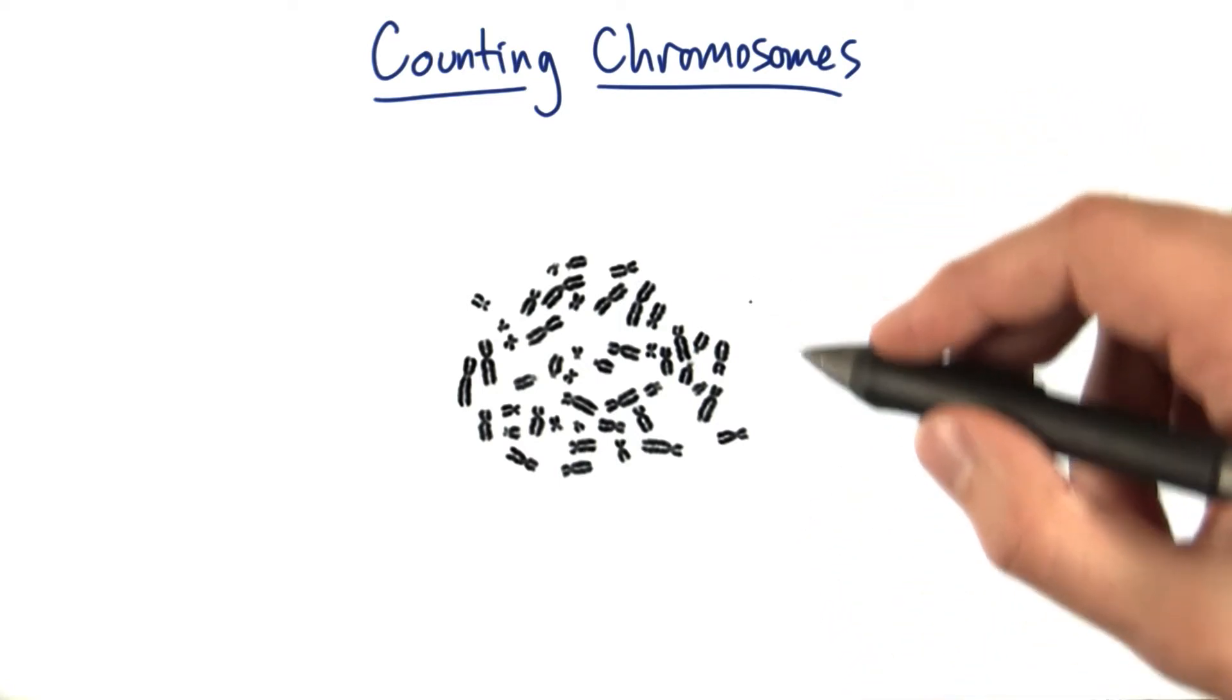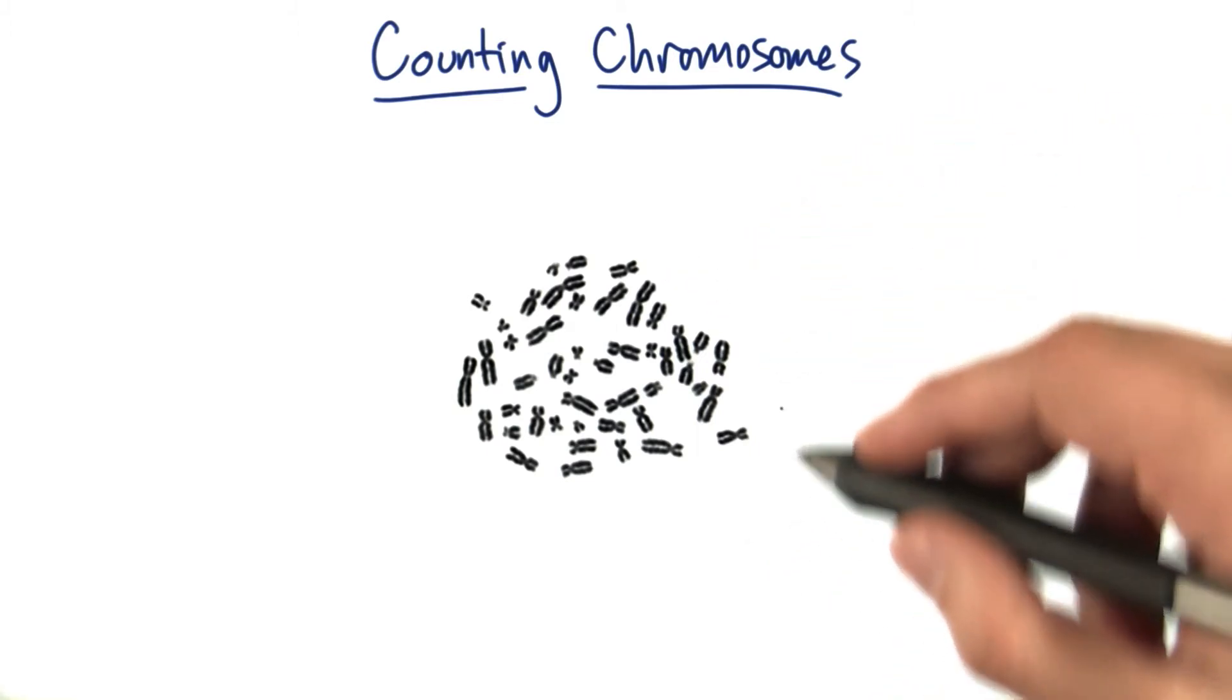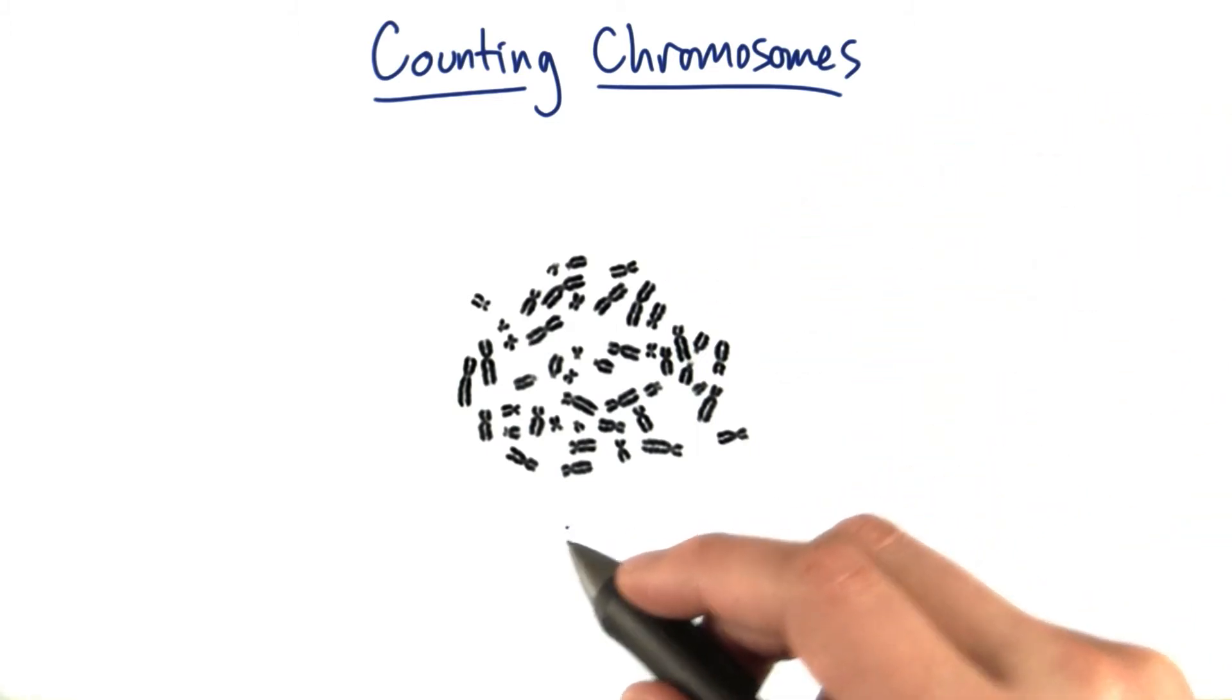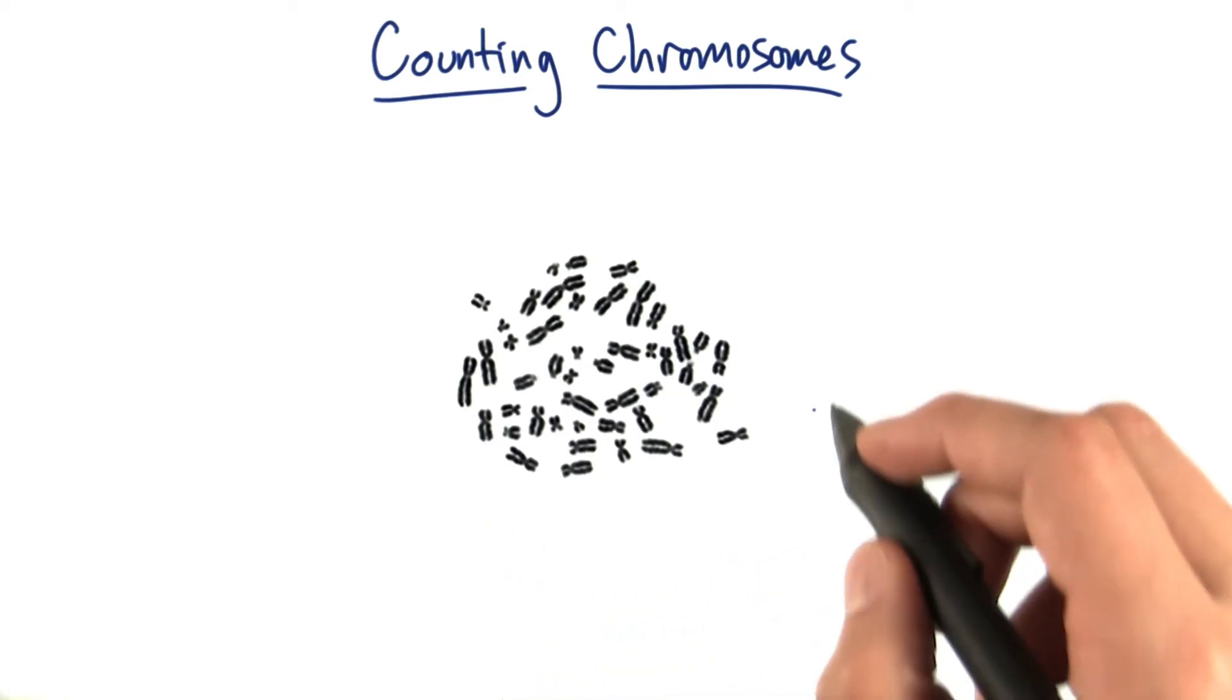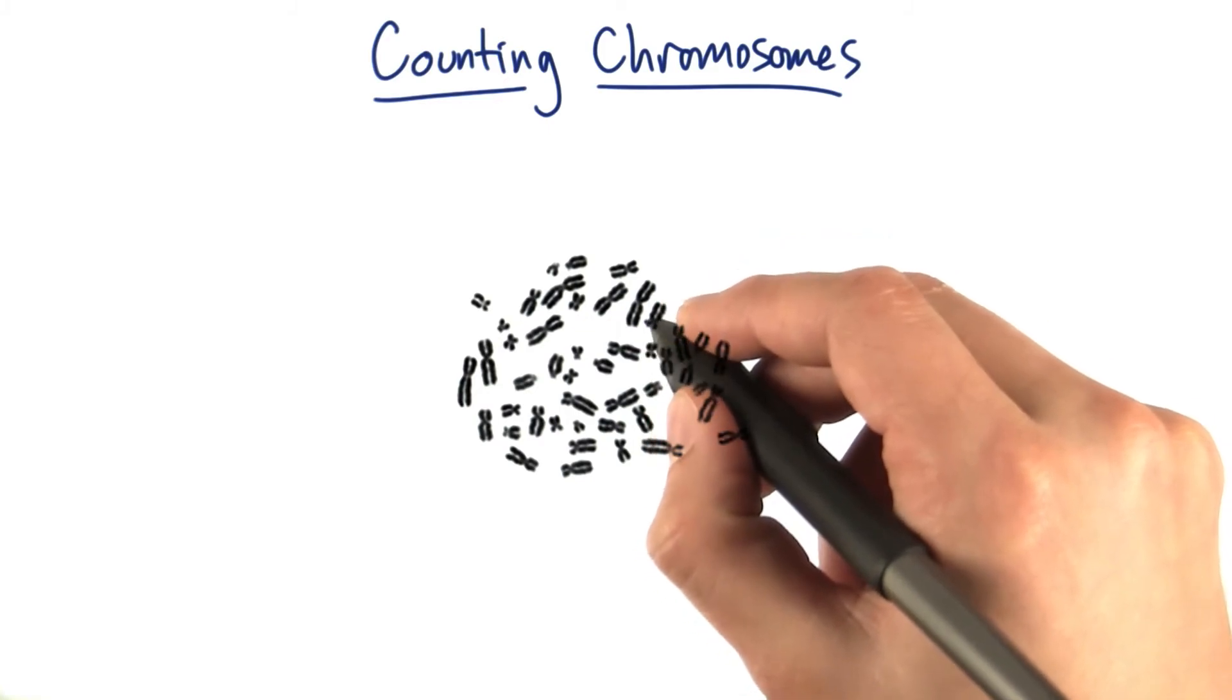So what we want to do is what scientists do, which is try to find them and line them up in order of biggest to smallest. And I'm actually going to give you a little taste of that here. And I'm actually going to try to organize them by literally cutting and pasting them one by one.